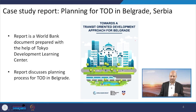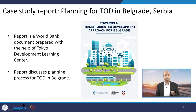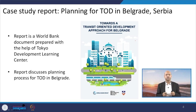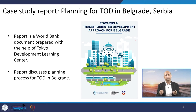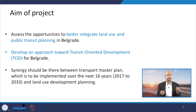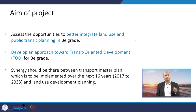This report on transit oriented development was prepared by the Tokyo Development Learning Center for the World Bank, as lot of funds were required from the World Bank. It discusses the planning process for the whole TOD in Belgrade city. The aim of the project is basically to assess the opportunities for better integrating land use and public transit planning in this city, because the public transportation system is not meeting requirements — a large percentage of total travel demand is met by cars. There are public transport systems based on buses, but there is still a requirement.